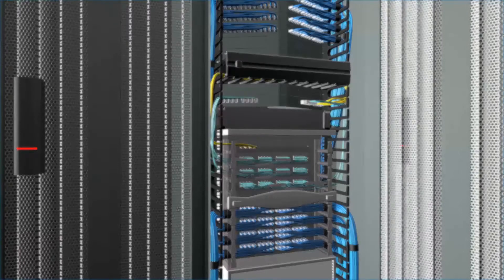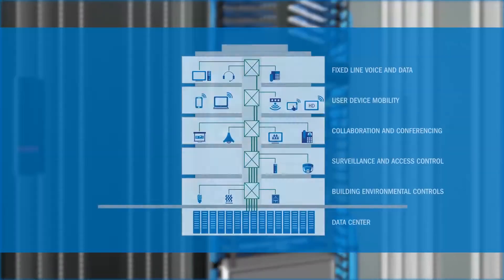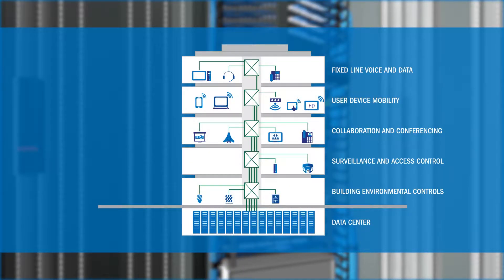Your network performance is also measured on its ability to support other adjacent building systems, including lighting controls, environmental and occupancy sensors, AV, and the integration of access control and video surveillance.